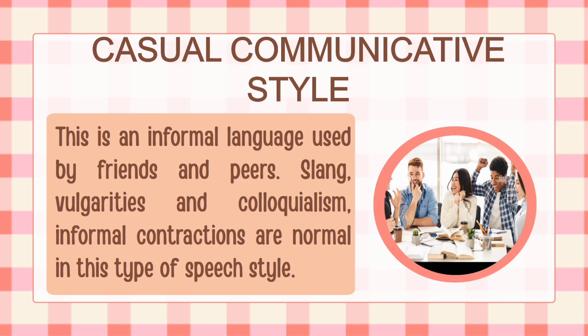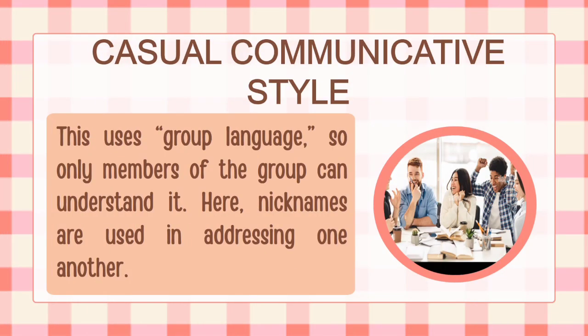The first is the casual communicative style. This is an informal language used by friends and peers. Slang, vulgarities, and colloquialism and informal contractions are normal in this type of speech style. This also uses group language so only members of the group can understand it. Here, nicknames are used in addressing one another.